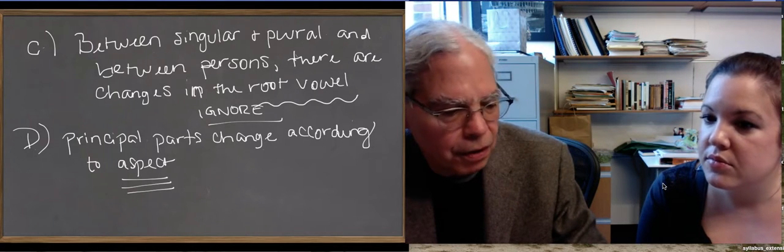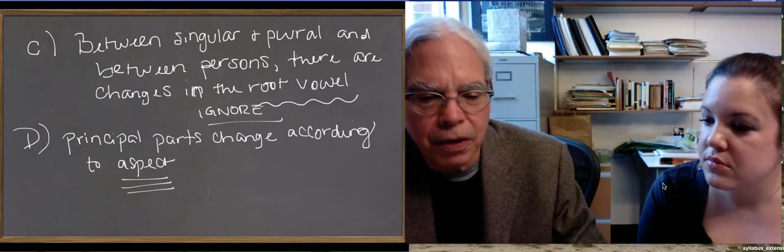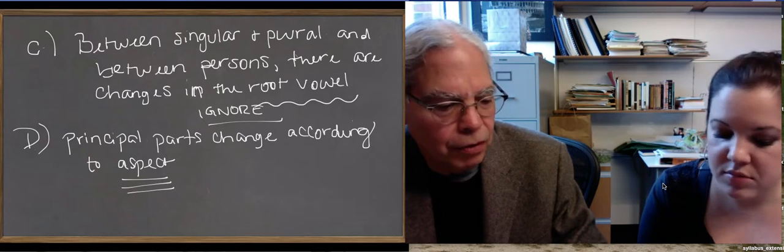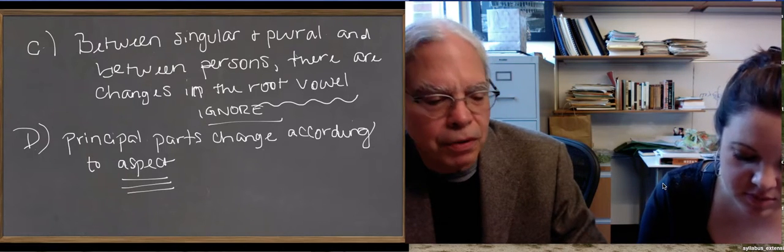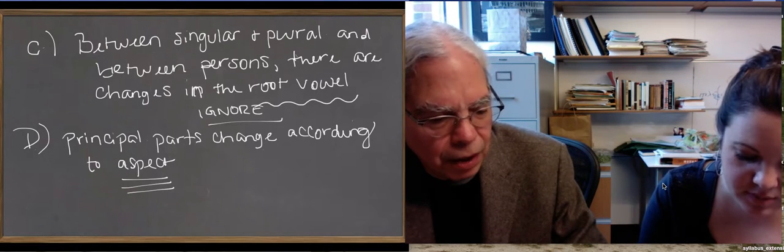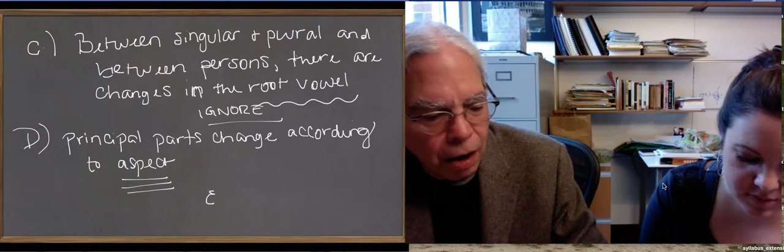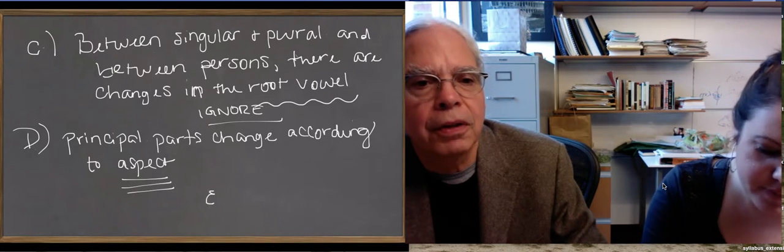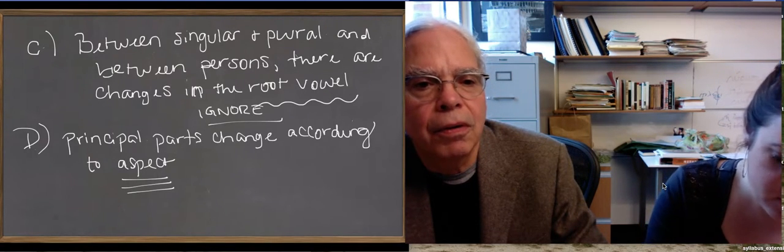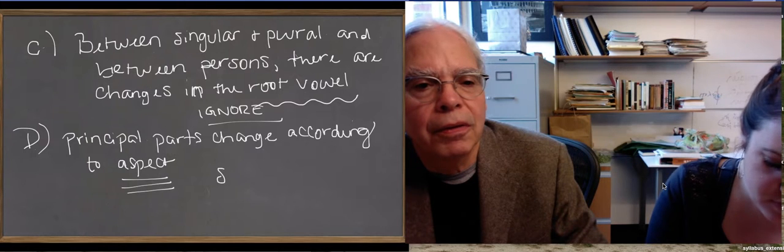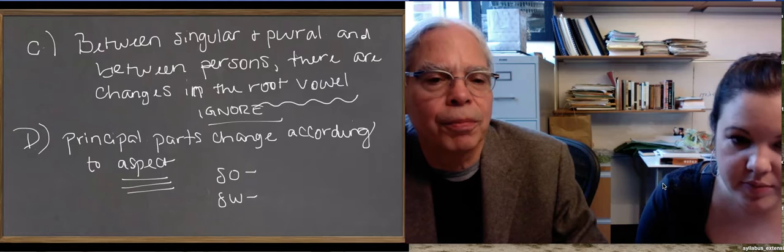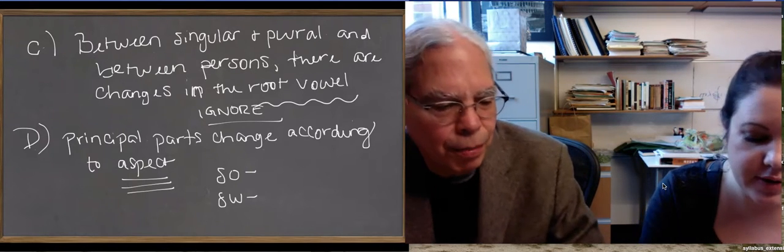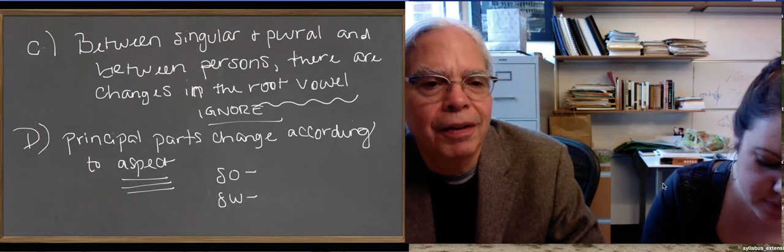And here's the way it works. In the aorist of these verbs, the stem is simple. So, example, let's give this an example, the verb to give, which is the simplest example. In the aorist, the stem is da or do. D-o, let's do aorist. Da or do. So that's the simplest form.